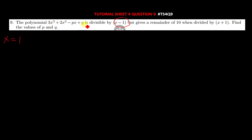When you put 1 in this expression, you have 3 plus 2 minus p plus q equals 0, since it's divisible by this, meaning the remainder is 0. So you make this the subject of the formula.